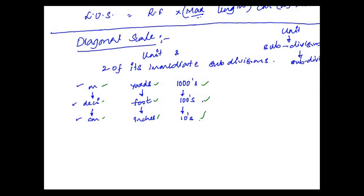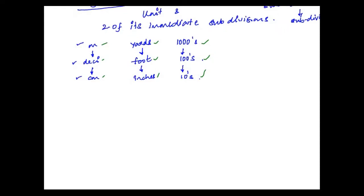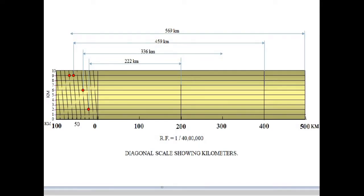First I will explain how the diagonal scale is actually constructed — the mathematical proof. I will show a diagonal scale how it is to be constructed, then we will go for the mathematical proof. We will see how moving along the diagonal gives us the units place or the subdivision of subdivision. For example, if we want 459, we went to 400 on the main scale, then 50 on the subdivisions, and then along the diagonal we moved up to 9 to get the units place.